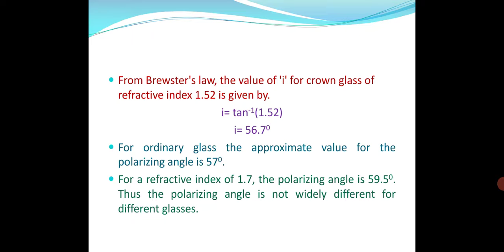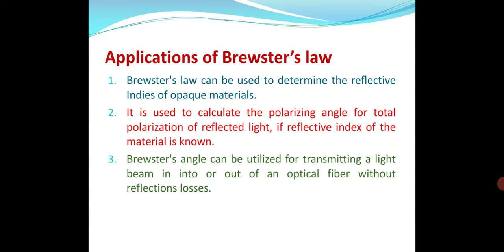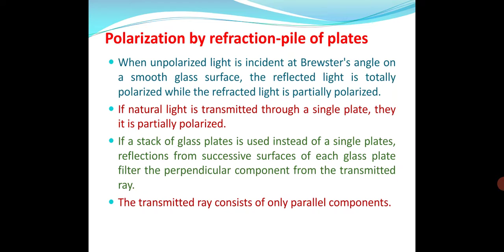From Brewster's law, we can easily find the angle for crown glass of a given refractive index. Applications of Brewster's law: it can be used to determine the refractive indices of opaque materials, to calculate the polarizing angle for total polarization of reflected light, and Brewster's angle can be utilized for transmitting a light beam into or out of an optical fiber without reflection losses.